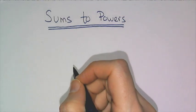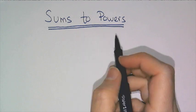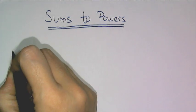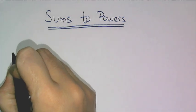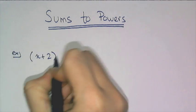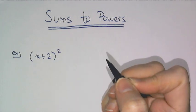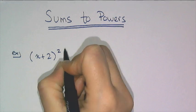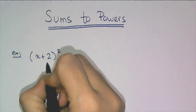In this lesson we're going to talk about how to raise a sum to a power. What I mean by this is simplifying an expression that looks like (x+2)² - so x plus 2 raised to the second power, a sum raised to a power.